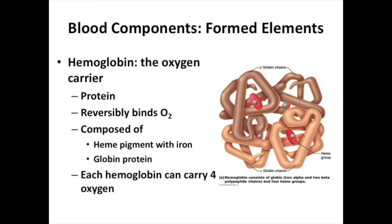Let's look at the hemoglobin contained inside the erythrocyte. Hemoglobin is responsible for carrying oxygen. It has a protein portion — the globin protein, seen as a brown folded structure on the slide — made of amino acids folded into a specific structure. Within that globin protein are four red discs known as the heme group or heme pigment. In the center of each heme group is a molecule of iron. So the three ingredients to make hemoglobin are the globin protein, the heme group, and the iron.